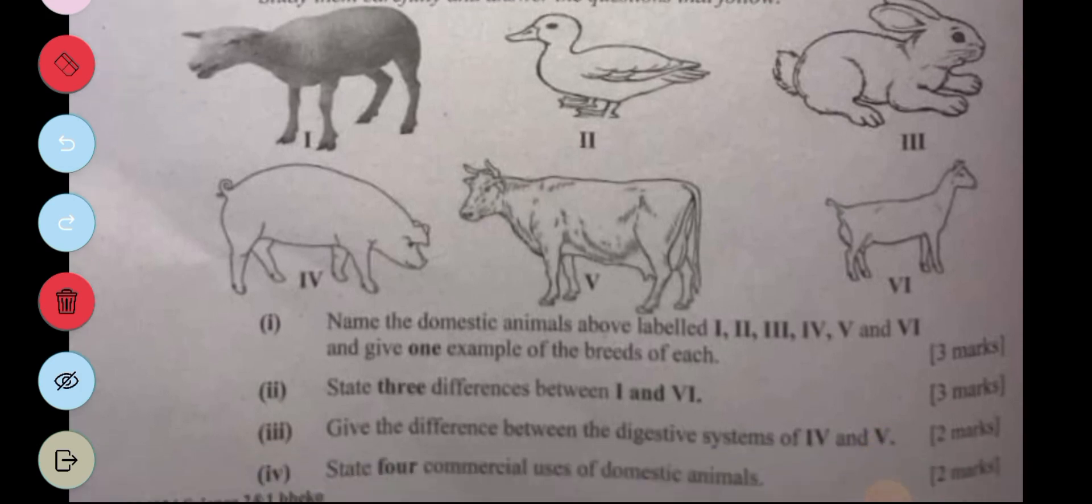One is a sheep, a breed of sheep is Merino. Two is a duck, the breed of a duck is Peking. Three is a rabbit, the breed of a rabbit is Angora. Four is a pig, the breed of a pig is Yorkshire. Five is a cow, the breed of a cow is Holstein. Six is a goat, the breed of a goat is Boer.